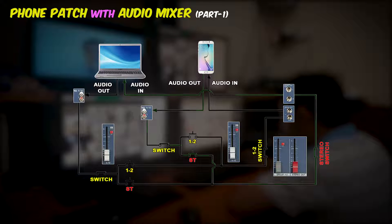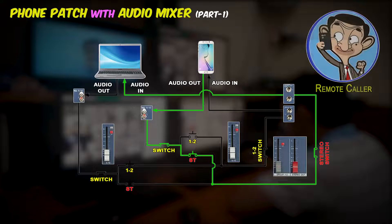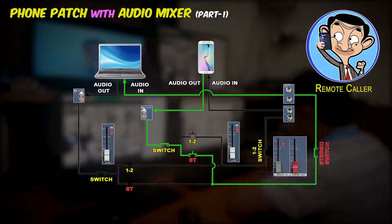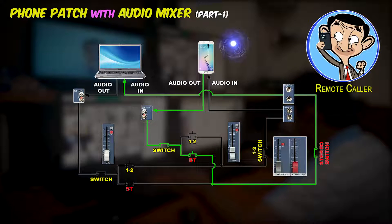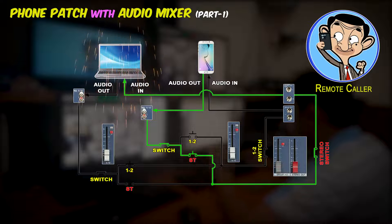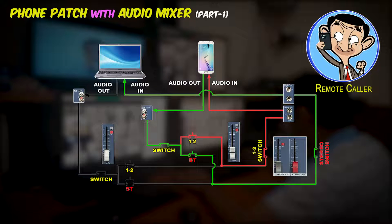Let us consider our cell phone connection first. As you can see, button 1 and 2 is off and ST is on. Assuming the remote caller will say hello — the phone-patched cell phone will receive the audio and it will travel throughout the circuit, shown here as a green line, and it will go to our laptop. This is a good circuit. But what if we push on button 1 and 2? Now both 1 and 2 and ST are on. Again, the remote caller says hello, and the audio travels in the green line to the laptop.